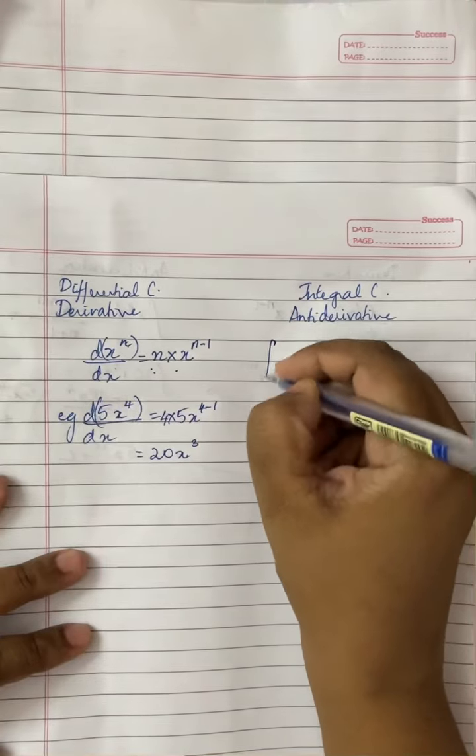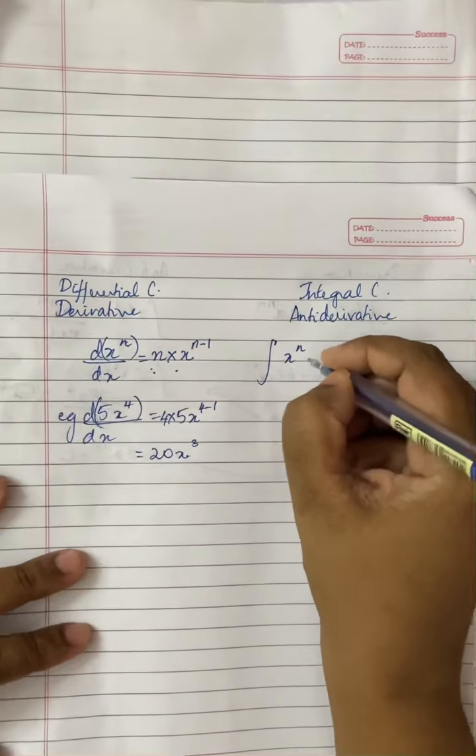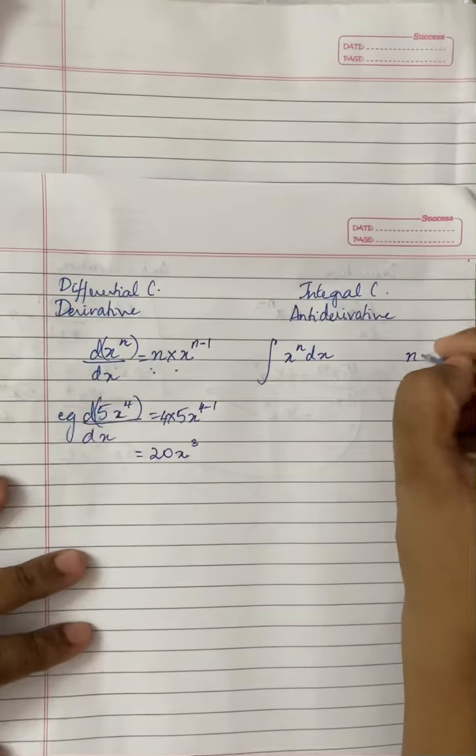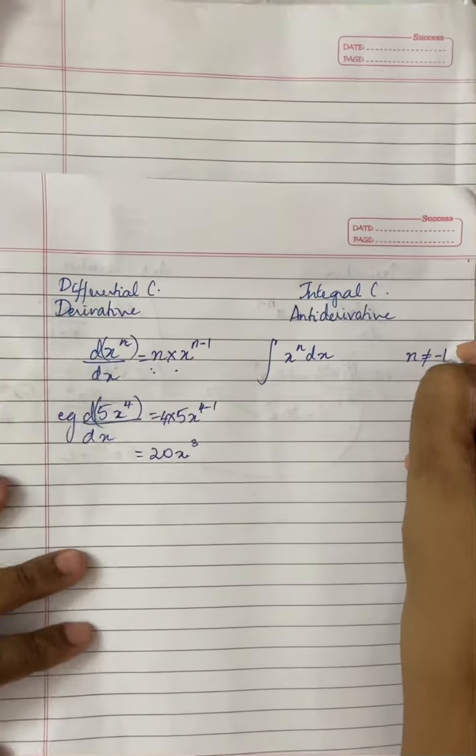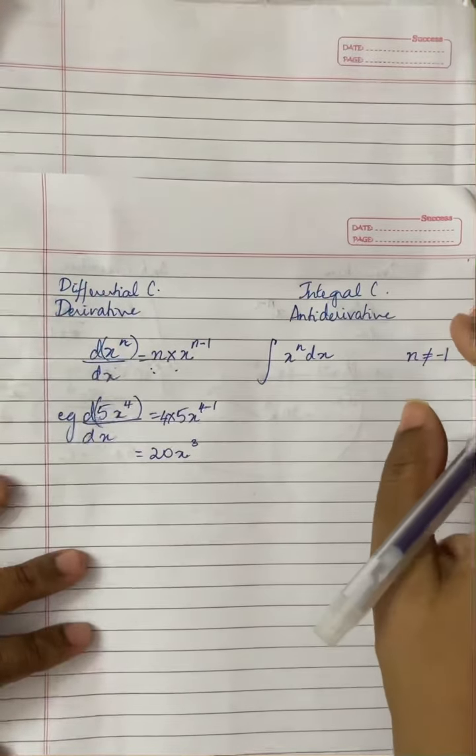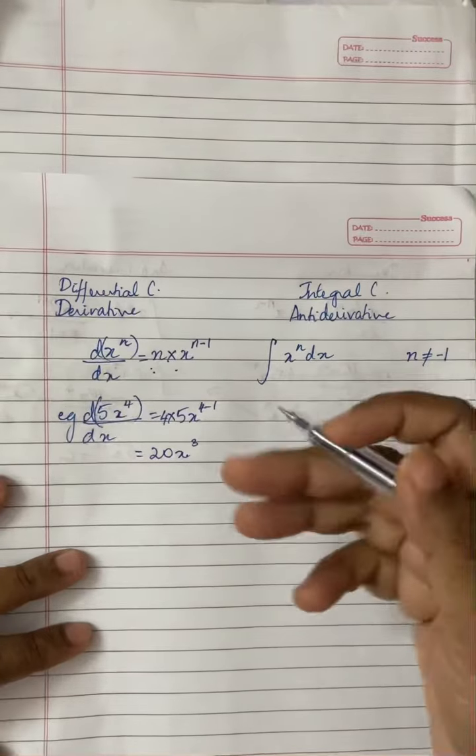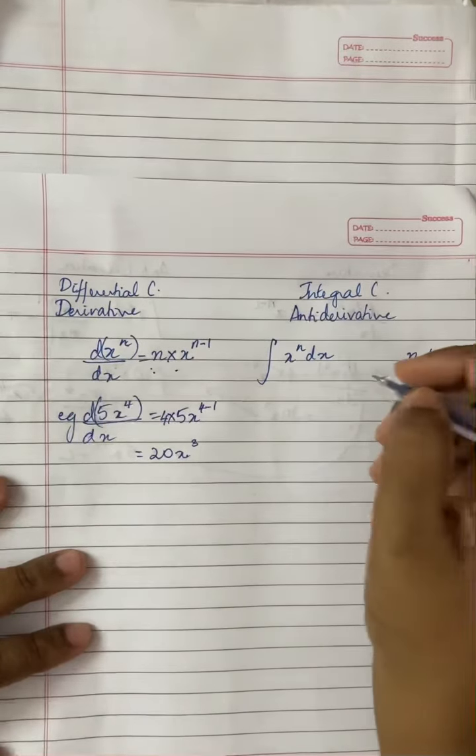For integration if I am trying to integrate x power n dx, please make sure that n is not equal to minus 1 because for minus 1 it is a different formula. Right now in our example n is not equal to minus 1, so we can go ahead with this.